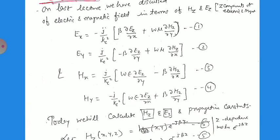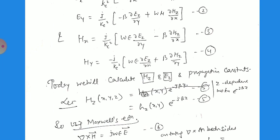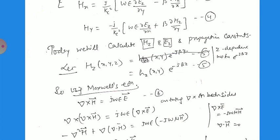Now we want to calculate Hz and Ez in terms of different parameters. Today we will calculate Hz and Ez and the propagation constant. Hz can be written in the form: small hz(x,y) times e raised to the power minus j·beta·z, where j is the imaginary unit, root of minus one. We have considered that the magnetic and electric fields vary exponentially along the z-direction and will vary along x and y. That is why we write small hz as depending on the x and y directions.